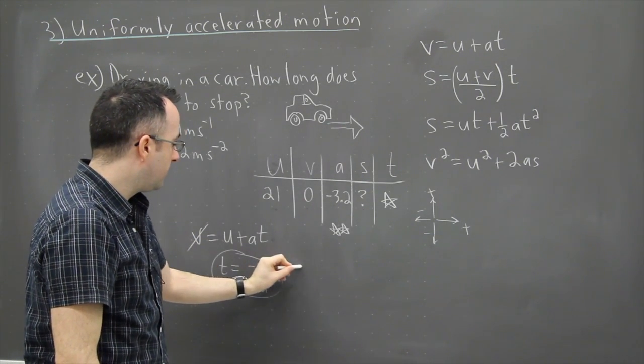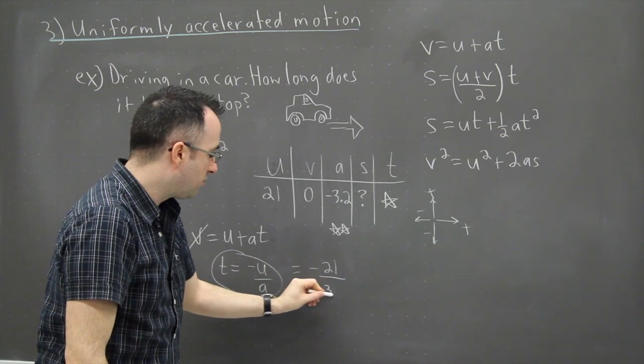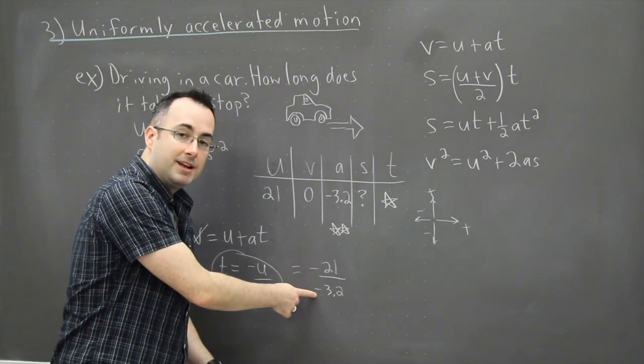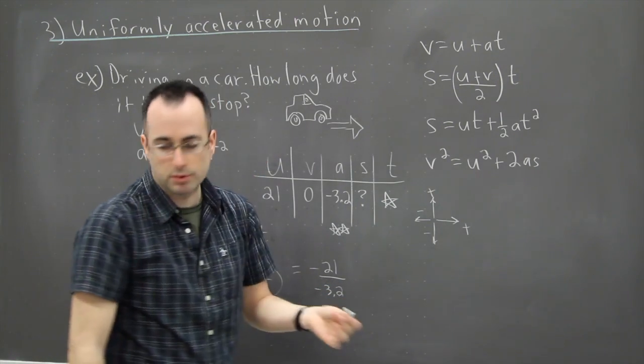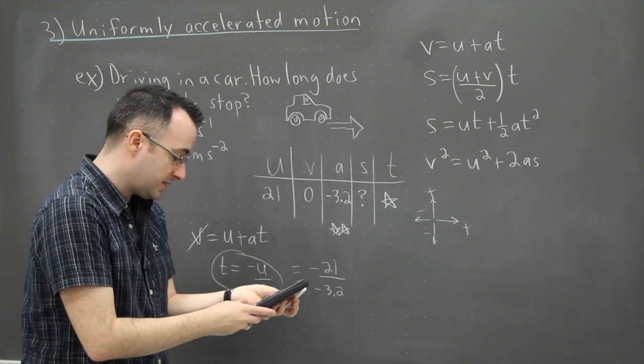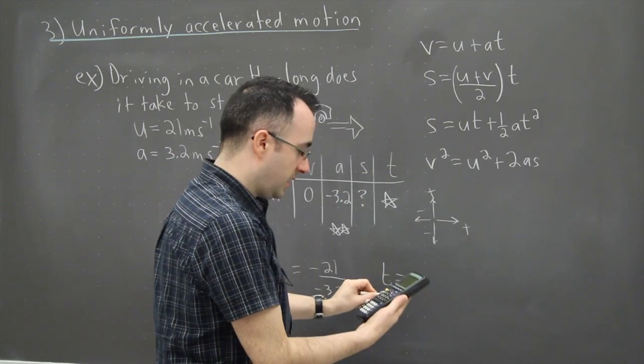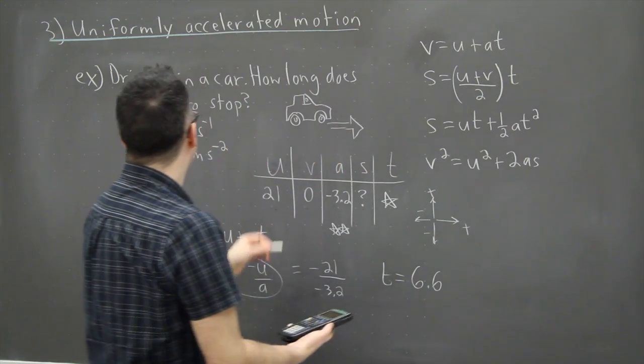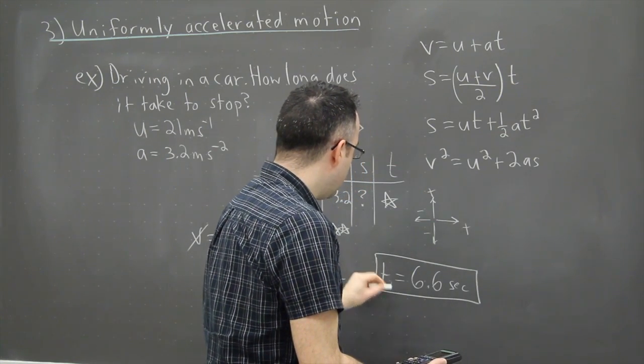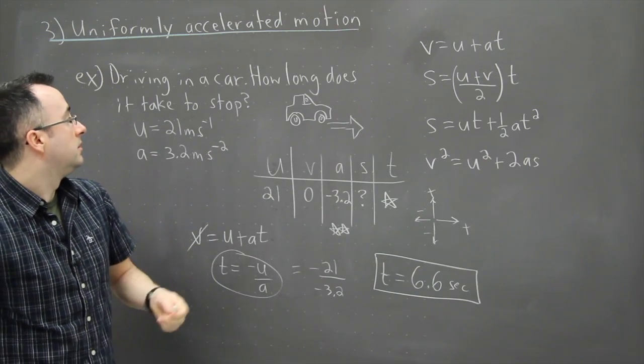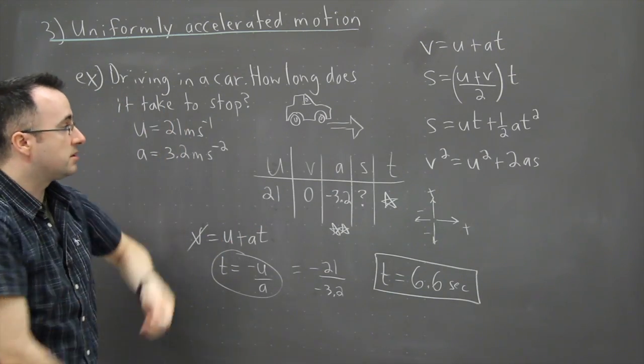That means I just need to plug in the values. So in this case, negative whatever u is, so that's 21, divide that by a, which is negative 3.2. Good thing I put in the negative, because if I didn't, I'd end up with a negative time. And as far as we know, you can't have that. Well not in at least any simple realistic situation. So now I'm going to use my trusty calculator, I'm going to say negative 21, divide that by negative 3.2, and I get an answer of roughly 6.6 seconds. So it'll take me 6.6 seconds in order to slow down from an initial speed of 21 meters per second down to a speed of zero. In other words, down to being stopped. So this is how we can solve these kinds of questions.